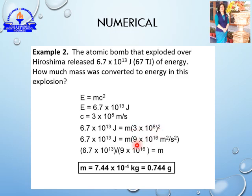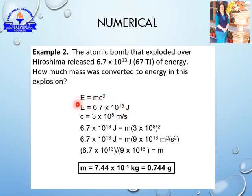Now (3 × 10⁸)² = 9 × 10¹⁶. Get the value of mass by dividing: 6.7 × 10¹³ divided by 9 × 10¹⁶. Cancel out the terms and you will get 7.44 × 10⁻⁴ kilograms. Converting to grams, only 0.744 grams of mass was converted into 6.7 × 10¹³ joules of energy — a huge amount of energy from just 0.744 grams.